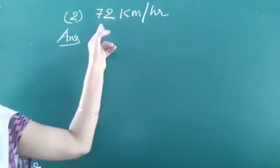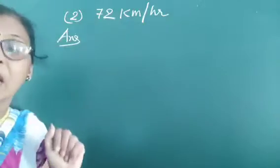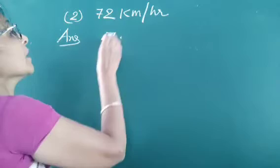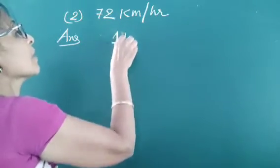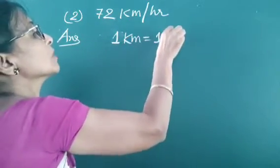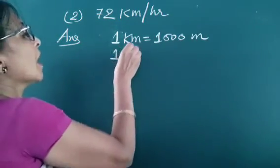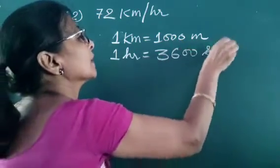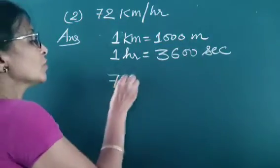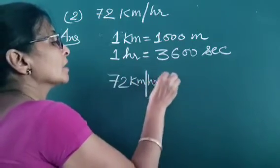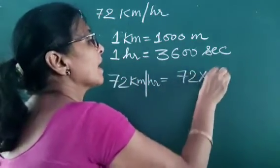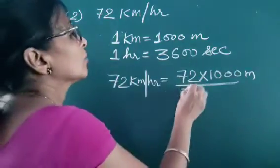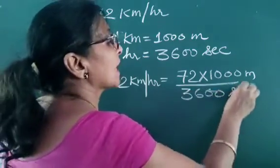Now the second one is 72 kilometer per hour converted into meter per second. The same we write here first. That is 1 kilometer equals 1000 meters and 1 hour equals 3600 seconds. So 72 kilometer per hour equals 72 multiplied by 1000 meters upon 3600 seconds.